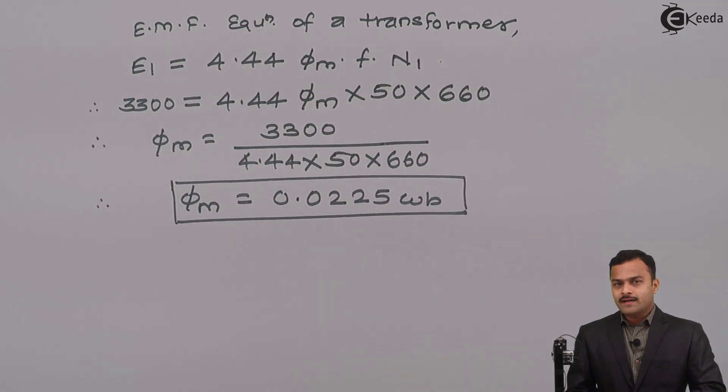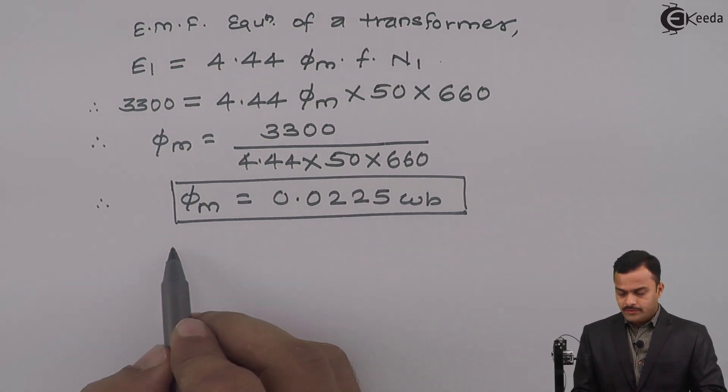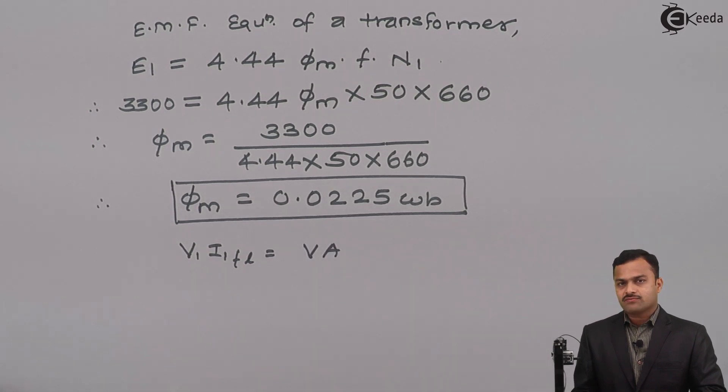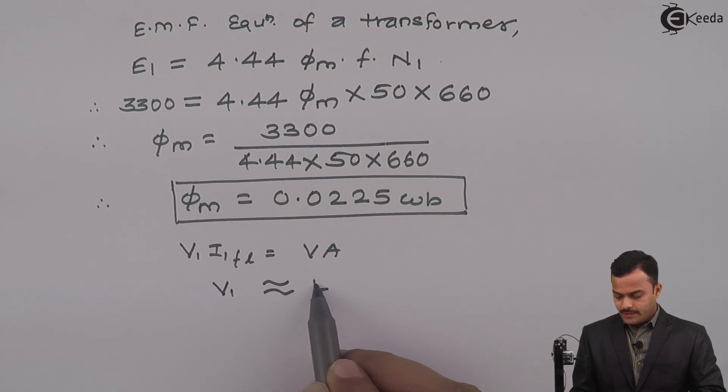Now let's find out the primary and secondary side full load currents. So we know V1 I1 FL equal to VA of a transformer. So V1 is approximately same as E1.